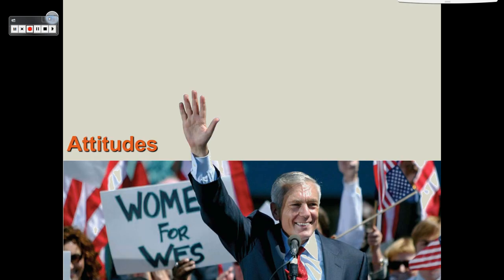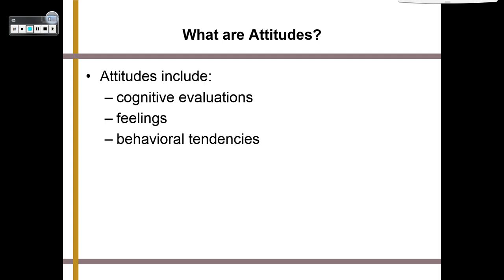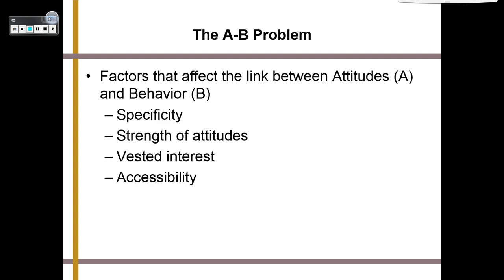We are going to start with attitudes. Attitudes can be cognitive evaluations or mental judgments, feelings, and behavioral tendencies. When studying attitudes, we have something called the A-B problem. There are certain factors that affect the link between your attitudes (A) and your behavior (B) — things like the specific situation or specificity, the strength of the attitude, whether you have a vested interest, and accessibility of values.